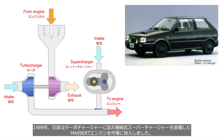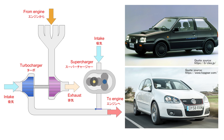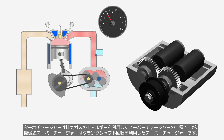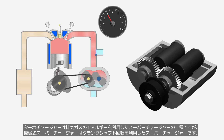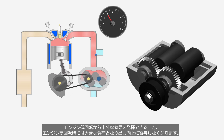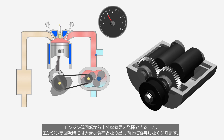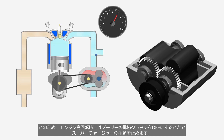In 1989, Nissan introduced the MA09 ERT engine equipped with both a mechanical supercharger and a turbocharger. In 2008, Volkswagen introduced the EA111 engine with a similar system. A turbocharger utilizes the energy of exhaust gases, whereas a mechanical supercharger utilizes crankshaft rotation. It can be effective at low engine speed; however, it becomes a heavy load at high engine speed and may no longer contribute to increased output. Therefore, during high engine speed, the operation of the supercharger is halted by turning off the electromagnetic clutch on the pulley.